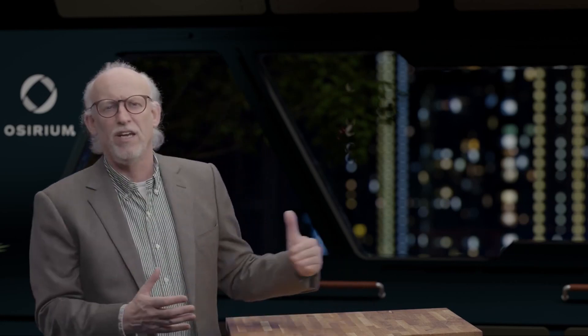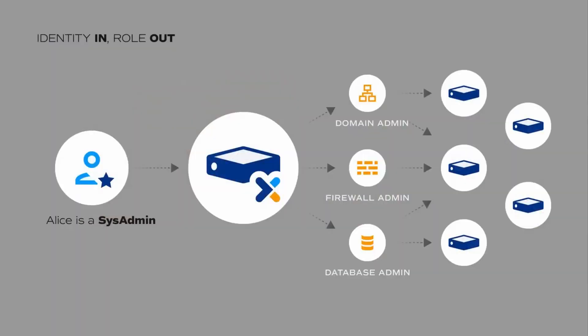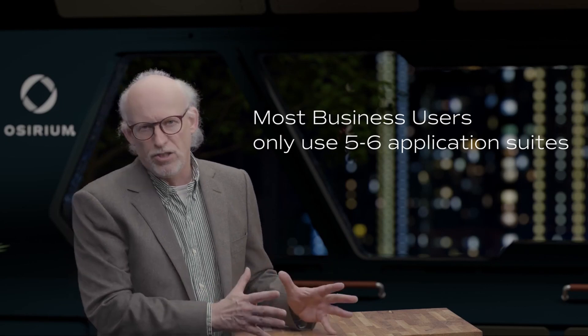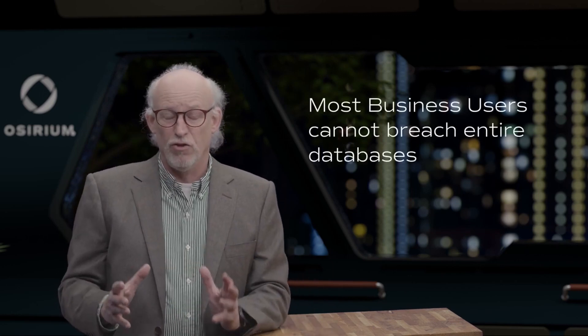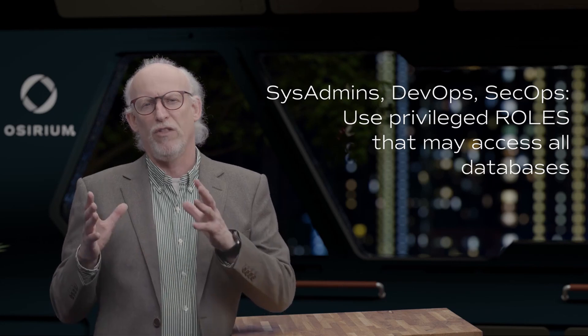IAM asserts that this user is who they say they are and has these attributes, and a PAM system does something very different. Although it can take in a user, do multi-factor authentication, and accept a user coming from an IAM system, when it single signs on to another system it typically does so at a privileged role level account. This matters because our sys admins, DevOps, and SecOps typically interact with hundreds of systems, devices, and applications, and unlike business users they need roles that could easily access entire company databases — so the security posture between the two is very different.